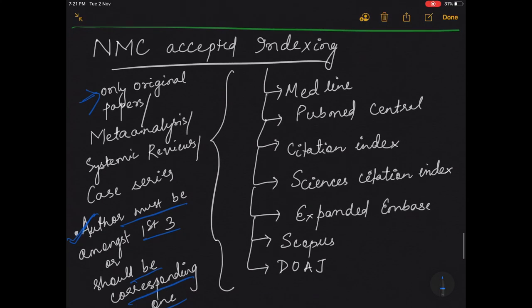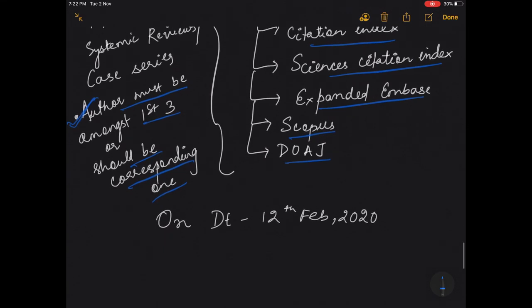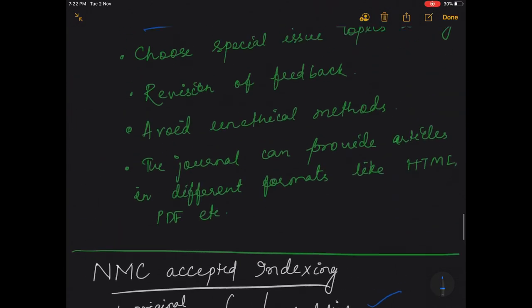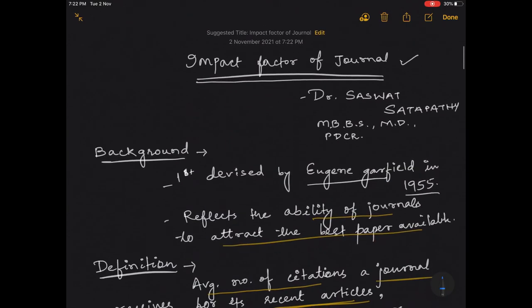And what are the indexing agencies which are accepted? Medline, PubMed Central Citation Index, Science Citation Index Expanded, Embase, Scopus, and DOAJ. DOAJ is Directory of Open Access Journals and this guideline was uploaded by NMC on date 12 February 2020.